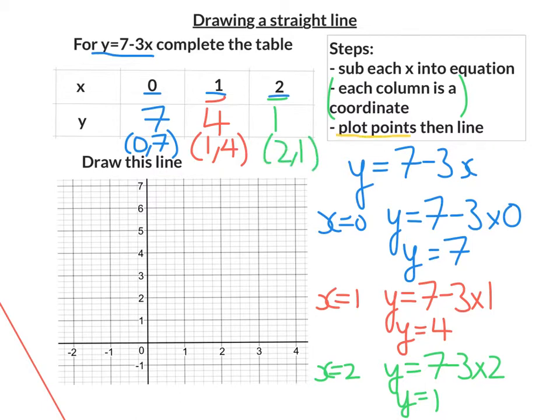Lastly, I need to plot these points. So let's go for the blue point first. It's 0 along the x-axis. So this will be here. And then 7 up. So that's my first point there. Next one is 1 along the x-axis and then 4 up, the y-axis. And then the last one is at 2, 1.